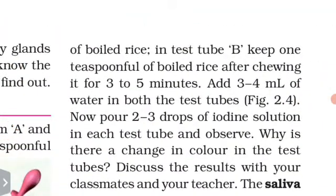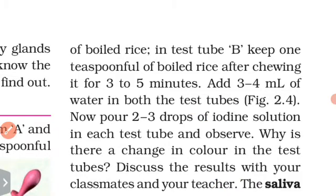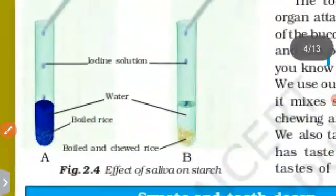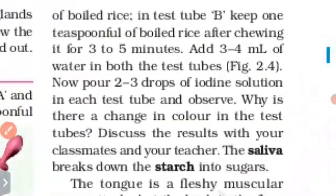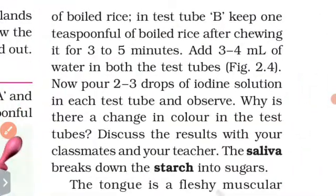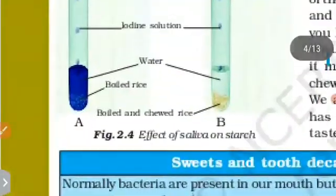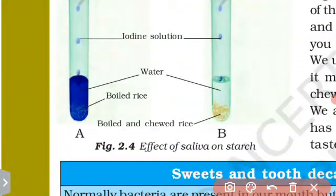Add 3 to 4 ml of water in both test tubes. Now pour 2 to 3 drops of iodine solution in each test tube and observe the colour change.